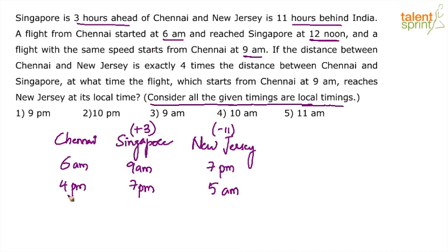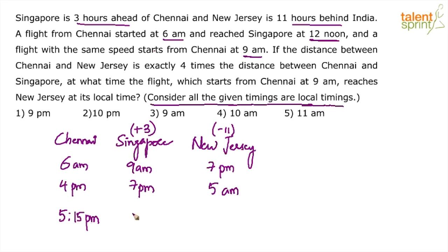Let's take one more example. Let's say the time in Chennai is 5:15 pm. What will be the time in Singapore? Easy — just add 3 hours. 5:15 plus 3 is 8:15 pm. No confusion with the addition.